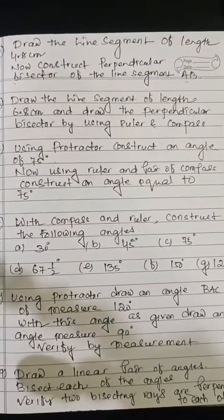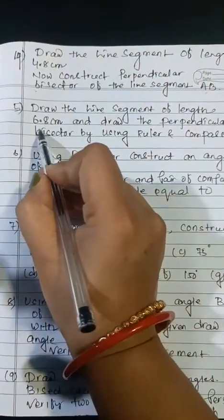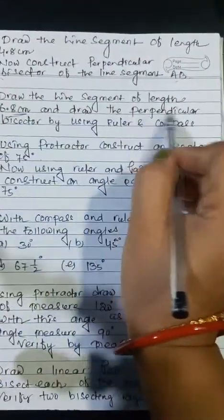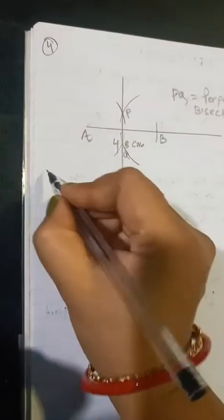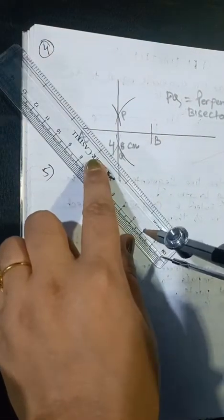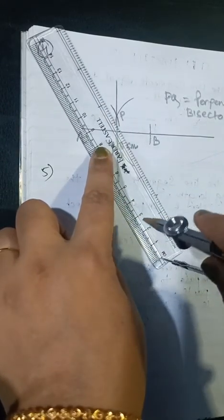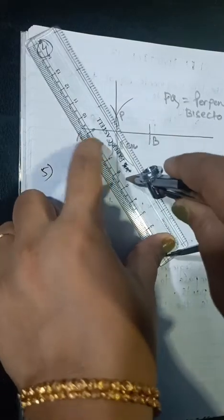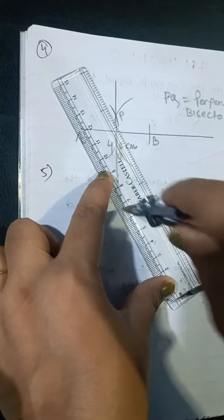Now question number 5: Draw the line segment of length 6.8 cm and draw the perpendicular bisector by using ruler and compass. Take the measurement of the line segment having length 6.8 cm. Place the pointer on the ruler — this is 6.5 cm and this one is 6.8 cm.